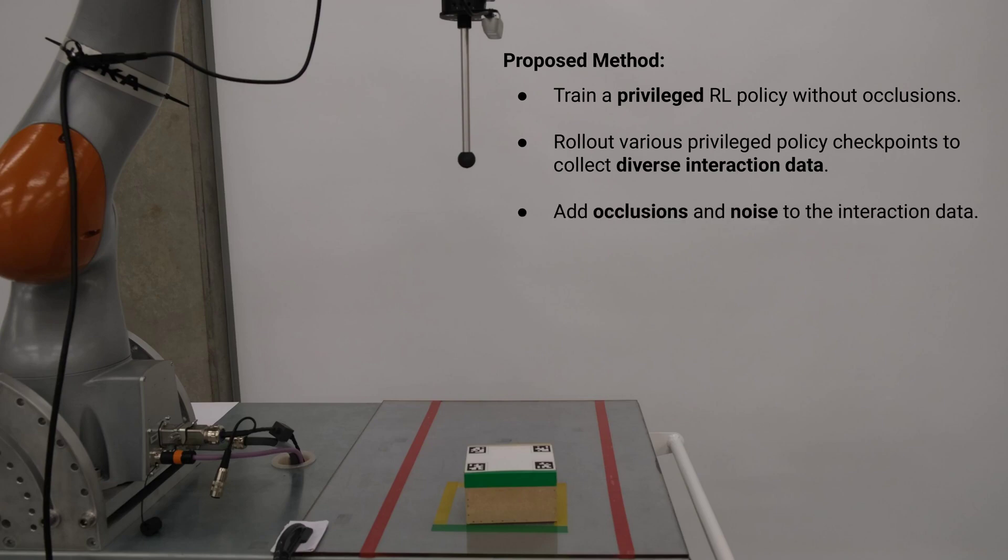Then, we add synthetic occlusions and sensory noise to the collected interaction data. We use this data to train a visual-tactile state estimator under a Bayesian deep learning framework to capture aleatoric and epistemic uncertainty.